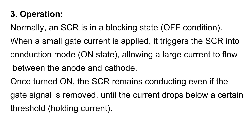Operation: Normally, an SCR is in a blocking state (off condition). When a small gate current is applied, it triggers the SCR into conduction mode (on state), allowing a large current to flow between the anode and cathode. Once turned on, the SCR remains conducting even if the gate signal is removed, until the current drops below a certain threshold — the holding current.